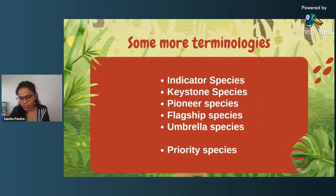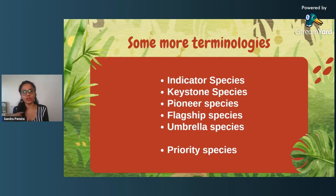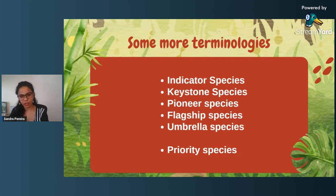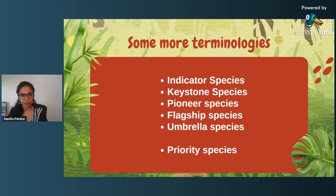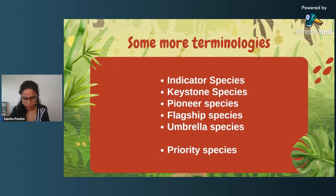When you talk about indicator species, there are other terminologies in ecology that can be confusing. You have indicator species, keystone species, pioneer species, flagship species, umbrella species, and priority species. Pioneer species are basically those species that arrive first at any particular region — for example, lichens. Even in the harshest habitat, if you turn rocks or look around, you will find some species of lichen growing. Species that are first to arrive in a particular habitat are called pioneer species.